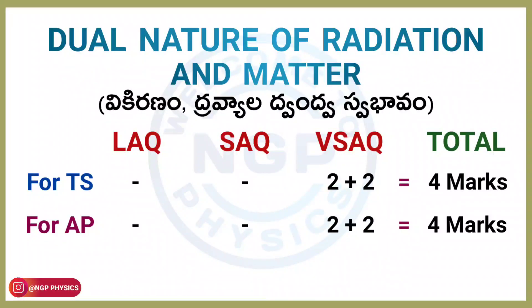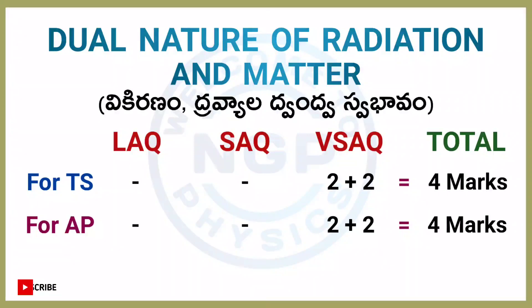Next chapter: Dual Nature of Radiation and Matter. For both AP and TS students, two VSAQ questions — two 2-marks questions. Chapter weightage is 4 marks.